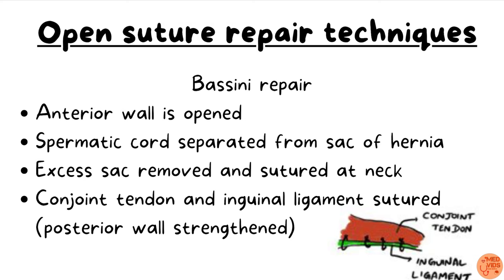Bassini repair is one of the pioneering hernia surgeries. The anterior wall is opened and the spermatic cord is separated from the hernia sac. The contents of the hernia sac are checked for viability — viable contents are reduced; infarcted contents are removed with corrective bowel surgery as needed. The excess sac is removed and sutured at the neck. The key additional step in Bassini repair is strengthening the posterior wall by suturing the conjoined tendon to the inguinal ligament all the way from the deep inguinal ring to the superficial inguinal ring.